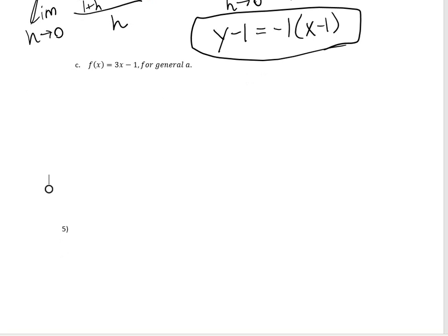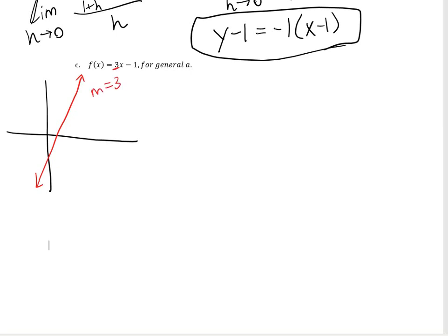The next question asks us to find the derivative given f of x equals 3x minus 1, for a general a. If I graph 3x minus 1, I'm going to have a straight line with a slope of 3. Now here's the deal: if I pick any point on this line and draw the tangent line, that tangent line is going to sit right on top of the original line. So the tangent line should always also have a slope of 3, because they're going to be the same line.